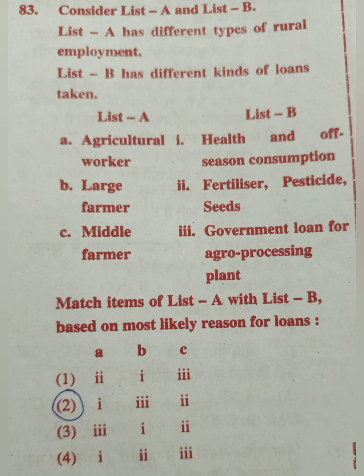Question 83: Match List A (types of rural employment) with List B (kinds of loans). List A: agricultural worker, large farmer, middle farmer. The match: large farmer corresponds to government loan for agro processing plant; middle farmer corresponds to fertilizer, pesticide and seeds loan. The correct answer is option 2.